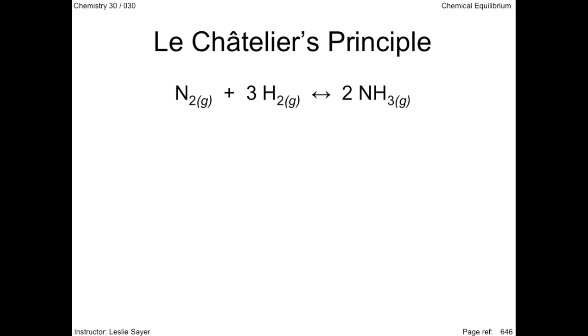Consider the Haber-Bosch process as an example. Ammonia, the desired product, is removed from the gas mixture by cooling. Ammonia liquefies before nitrogen and hydrogen does. I'm indicating the removal of ammonia by my red arrow.